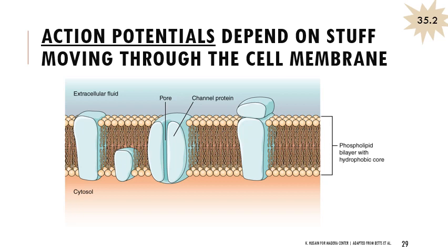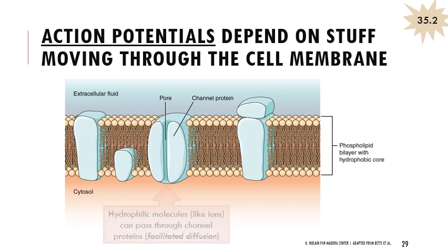Before explaining action potentials, I want to briefly review cell membranes. We have a phospholipid bilayer that has a lot of fat in it, so it's very hydrophobic. Material that likes water - hydrophilic - can't cross through it easily. We have channel proteins embedded in the membrane. Hydrophilic molecules like ions, which dissolve easily in water, often pass through those channel proteins in what's called facilitated diffusion - a passive process that doesn't require energy. In some situations those channel proteins aren't automatically open.